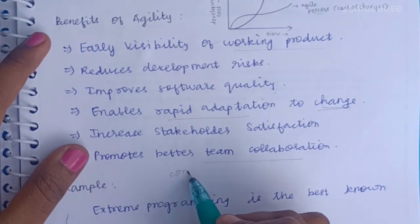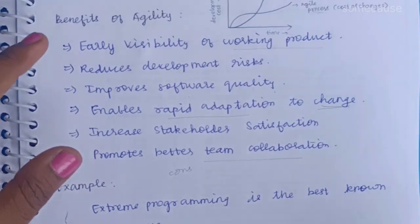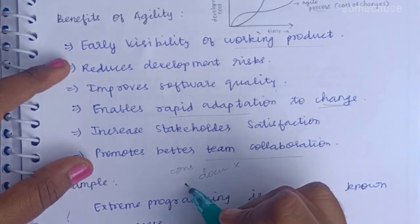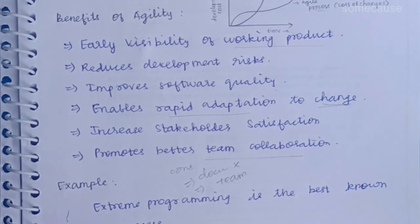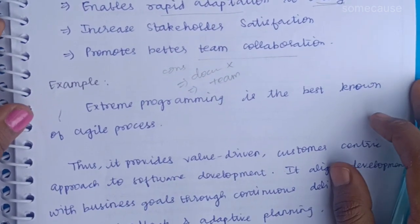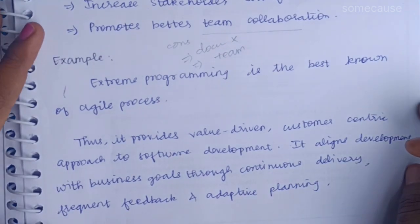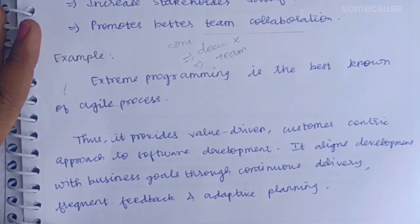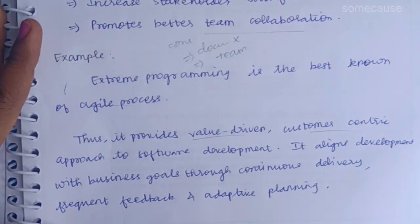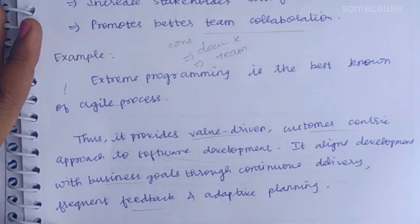Disadvantages are also important — proper documentation and teamwork are important, and sometimes there are problems that come to the team. This is an example of extreme programming, which is a value-driven, customer-centric approach to software development based on business goals, continuous feedback, customer needs to be adequate, and adaptive planning.